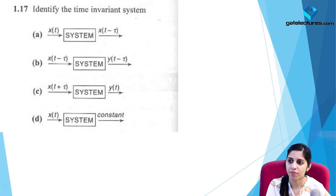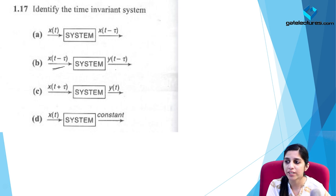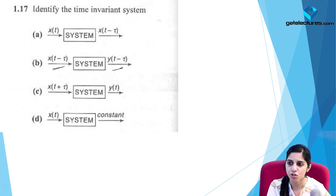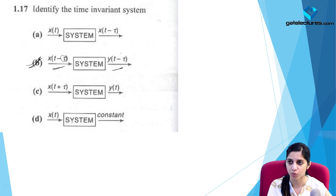To identify a time invariant system: if the input is delayed by tau, the output should be delayed by the same amount tau. Option B represents this basic definition of time invariance — delaying or advancing the input by tau delays or advances the output by the same amount.